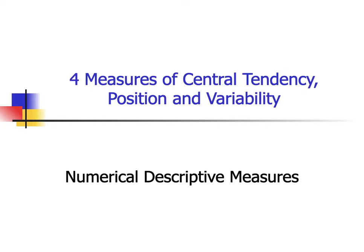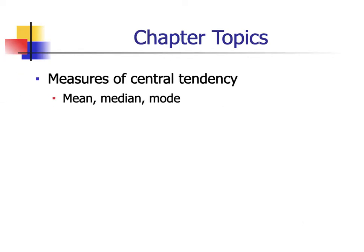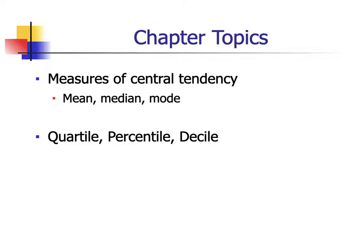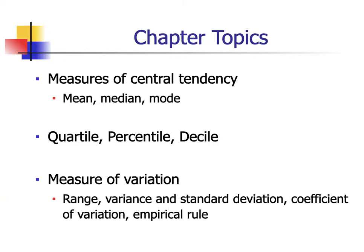For module 4, our focus will be on the different measures of central tendency, non-central position, and variability. The different measures of central tendency will include mean, median, and mode. For the different measures of non-central position, we'll include quartile, percentile, and decile. The different measures of variation will include range, variance, and standard deviation. The different applications will cover coefficient of variation and the empirical rule. We'll go over them one by one.